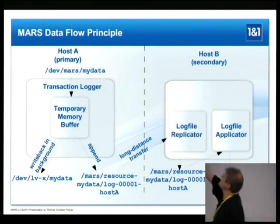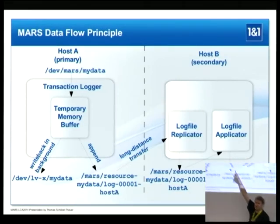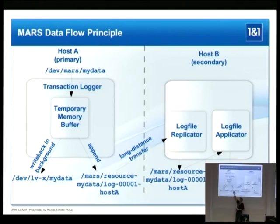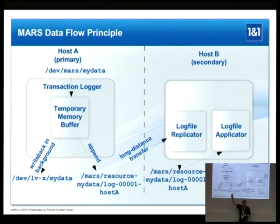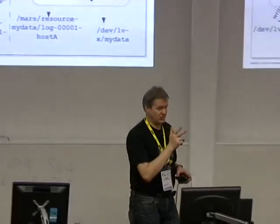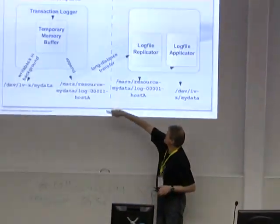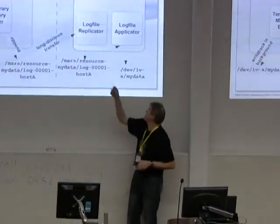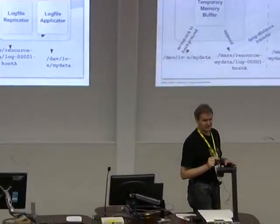Looking at the process architecture: on the primary side, a write request is buffered in temporary memory and appended sequentially to the transaction log file — crucial for performance — then written back to the device in the background in a potentially different order, also crucial for performance. The second process is the long-distance transfer. The third process, which can be switched on independently, is the apply of the log file. You can stop it for an hour and do read-only mounting. With the next release, snapshots would also be a possible feature.